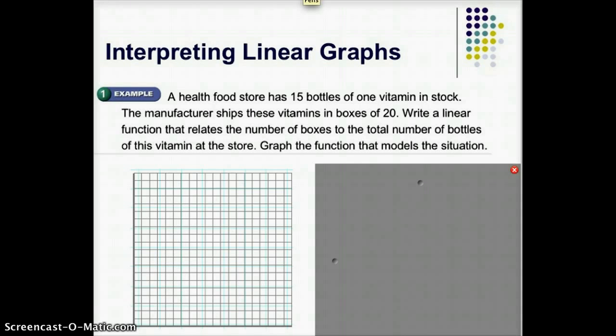So it already tells us our variables. They are the number of boxes and then the total number of bottles. And I want to think about which one depends on the other. It looks like the total number of bottles would depend on the number of boxes that you have. So I'm going to call the number of bottles Y and the number of boxes X.